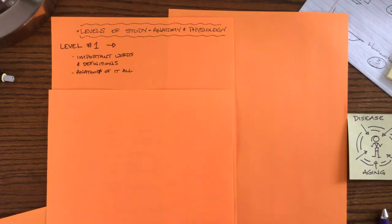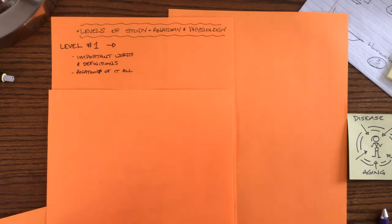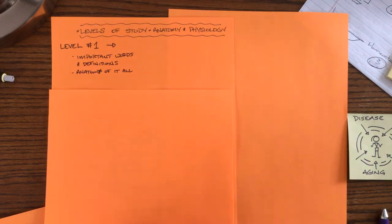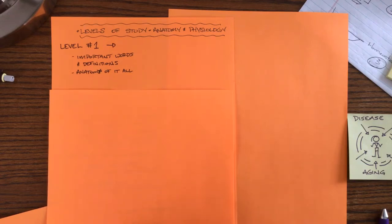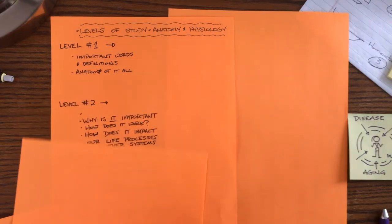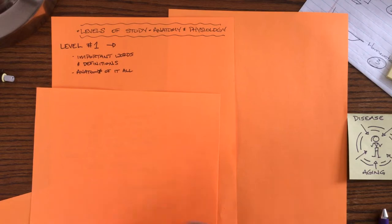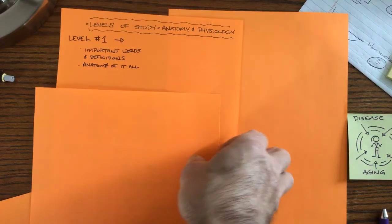Alright, hey guys, we're just updating you on how anatomy is going to go from here on out, and just a reminder for a lot of things. Level one is basically just when we take a system and start looking at it. Our new system starting today is the endocrine system, and what we want to understand to begin with are important words and definitions, all the organs, all the glands, all the hormones involved with the endocrine system. That's level one.